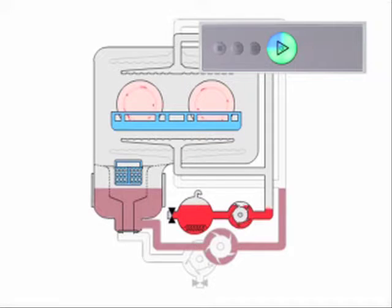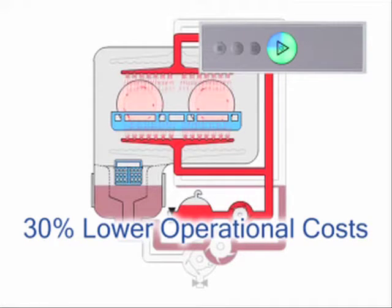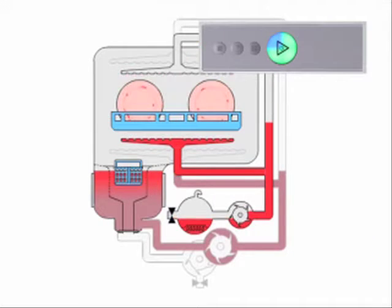The optimized rinse uses just 2.5 liters per cycle, meaning reduced water, chemical and energy usage, and reduced CO2 emissions.